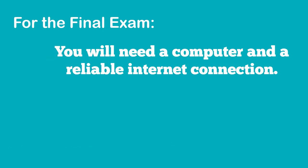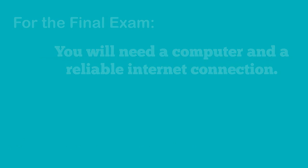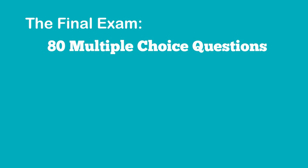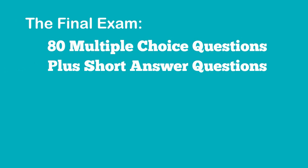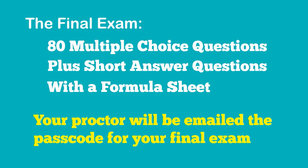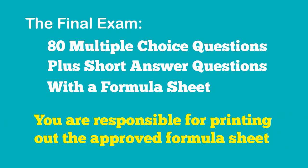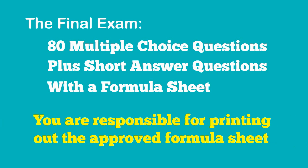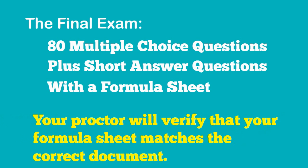To write the final exam, you will need a computer and a reliable internet connection. The final exam consists of 80 multiple choice questions plus a series of short answer questions. You will be allowed a formula sheet. Your proctor will be provided with the passcode for your final exam. It is your responsibility to print the allowed formula sheet, and your proctor will verify that your formula sheet matches the correct document.